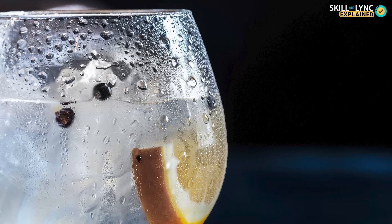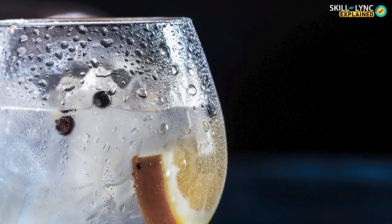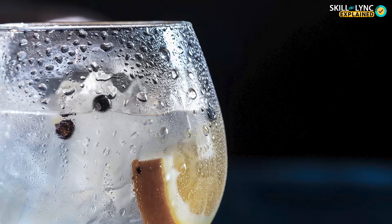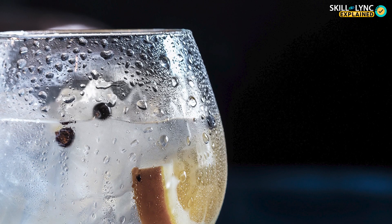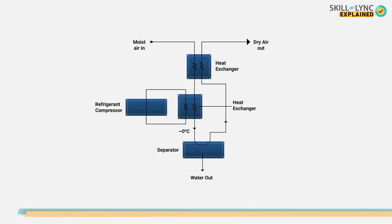As we know, on cooling air, water condenses and the moisture content decreases. This same principle is used in a refrigerated dryer. A refrigerated dryer cools the air to just above 0 degrees Celsius, which causes almost all the water to condense and get collected in a separator.